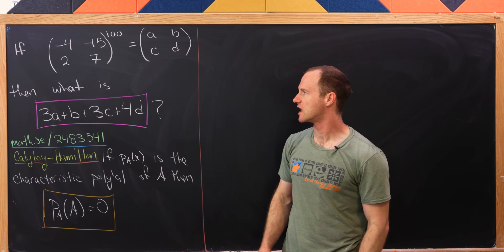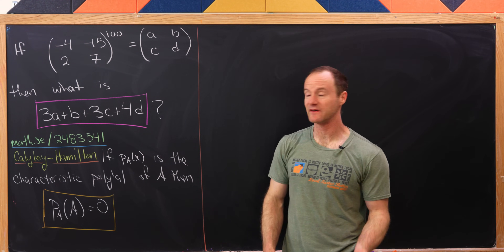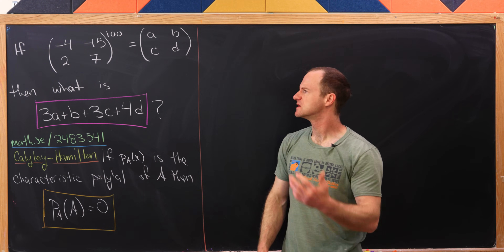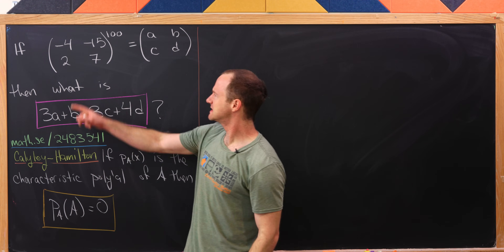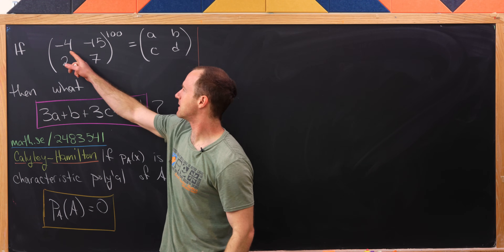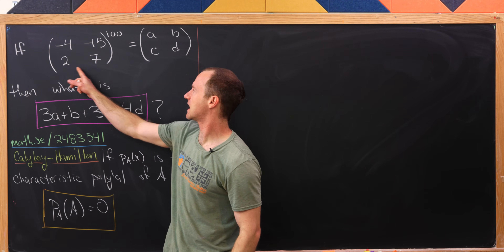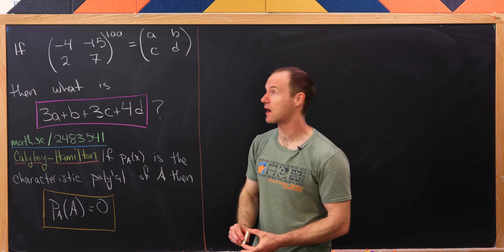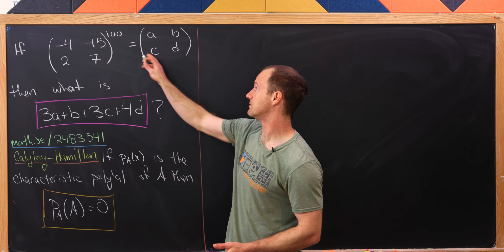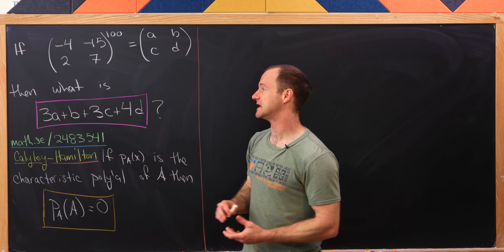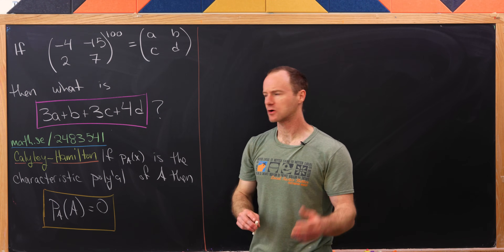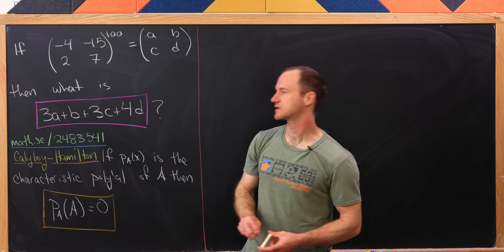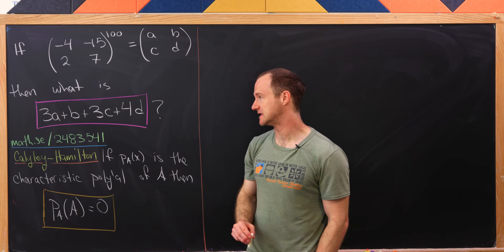Today we're going to look at a nice linear algebra problem that I found on the Math Stack Exchange. Let's say that the matrix negative 4, negative 5, 2, 7 to the 100th power is equal to the matrix A, B, C, D. Our goal is to determine 3A plus B plus 3C plus 4D.